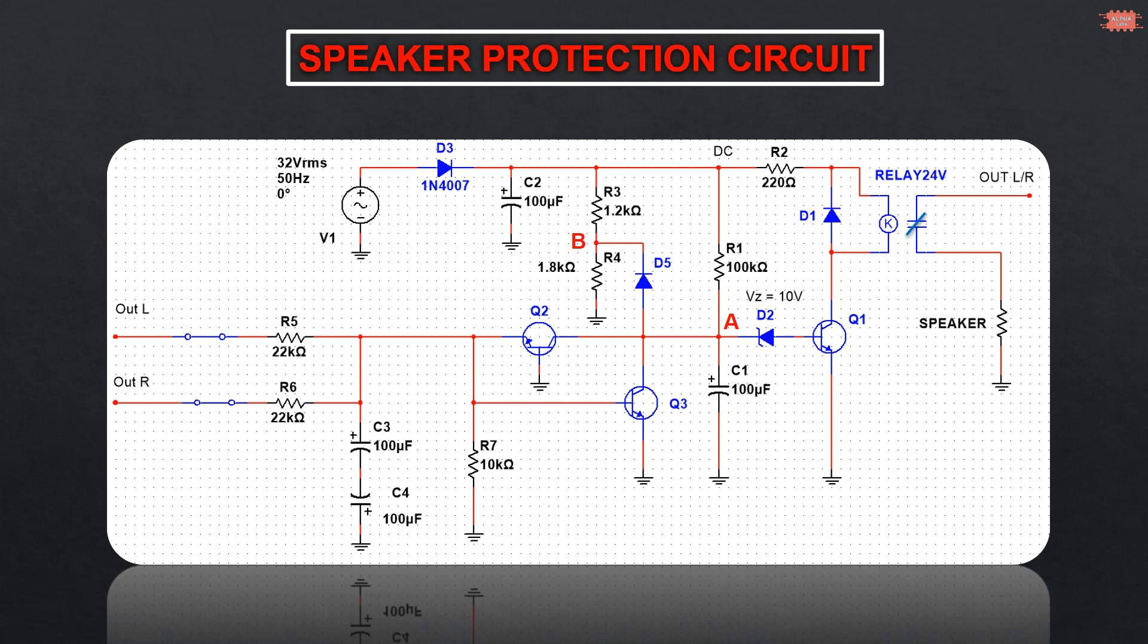Next, I will explain the function of transistor Q2 and transistor Q3. Assuming that a problem happens in the amplifier leading to DC appearing at the speaker output. If it is a DC positive voltage, then transistor Q3 will be biased. This leads to the voltage of capacitor C1 being discharged through the collector-emitter junction of transistor Q3.